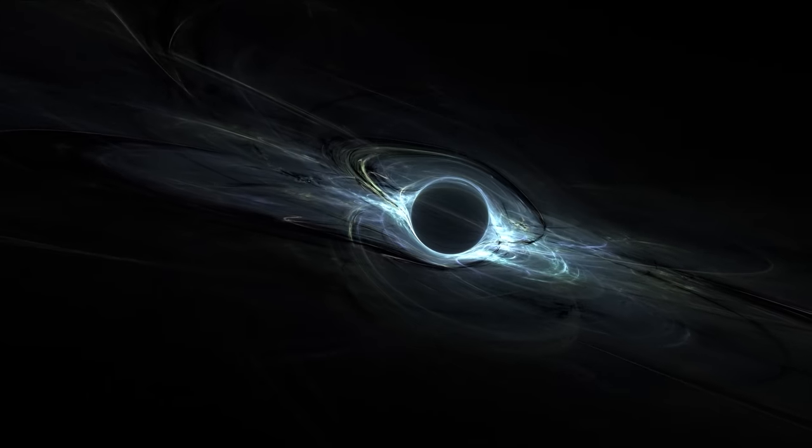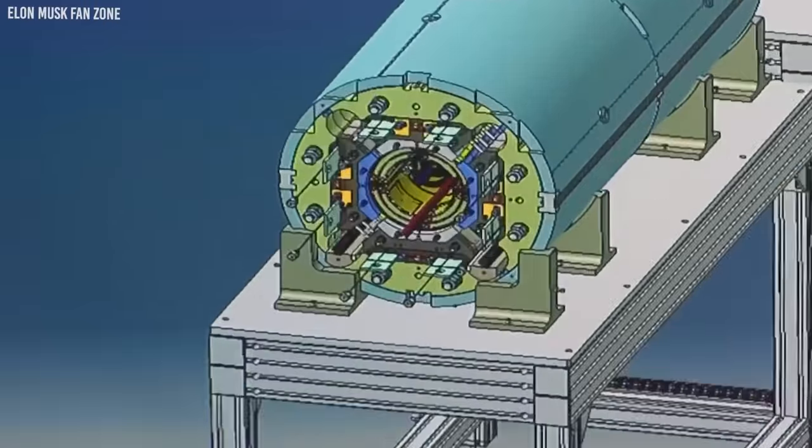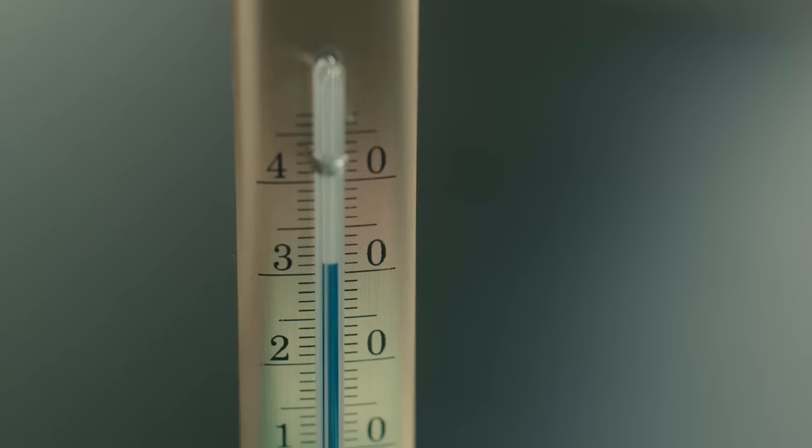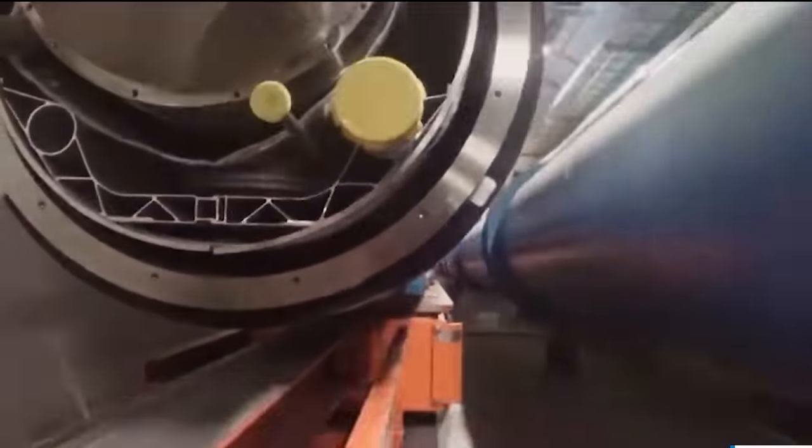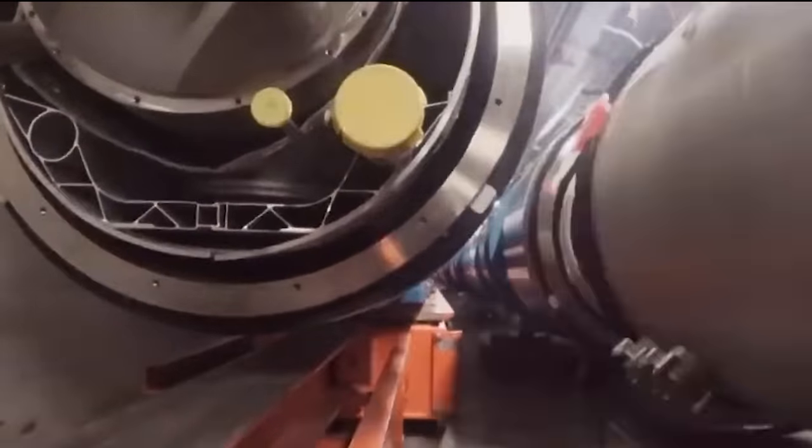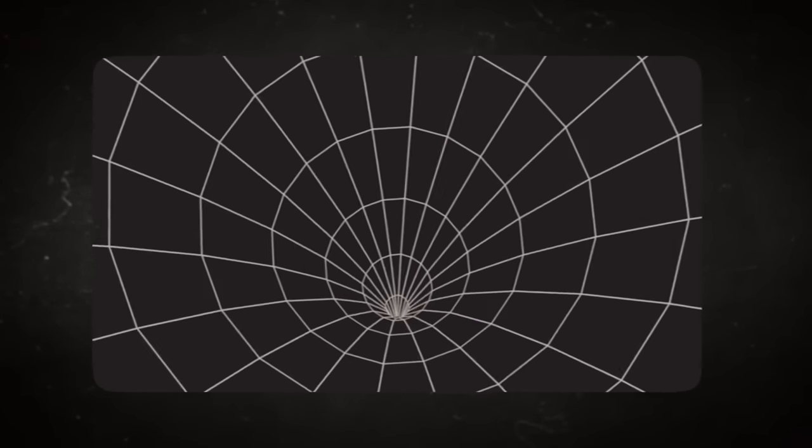Fun fact: the Large Hadron Collider is colder than outer space. To be precise, it is less than two degrees Fahrenheit, almost at absolute zero. To achieve this, a cryogenic cooling system is utilized to keep it cold for the sake of the superconductor electromagnets, which send proton beams hurtling toward one another in a loop 100 meters below the ground.